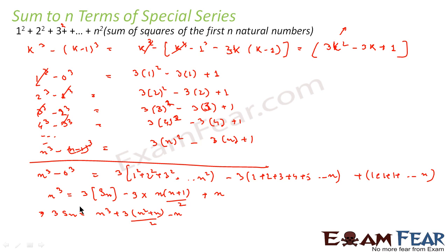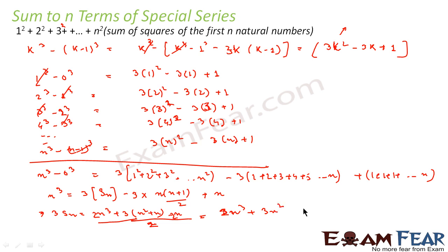Rearranging: 3·Sn = n³ + 3·n(n+1)/2 − n. Taking 2 as the common denominator on the right: 3·Sn = (2n³ + 3n² + 3n − 2n) / 2 = (2n³ + 3n² + n) / 2.